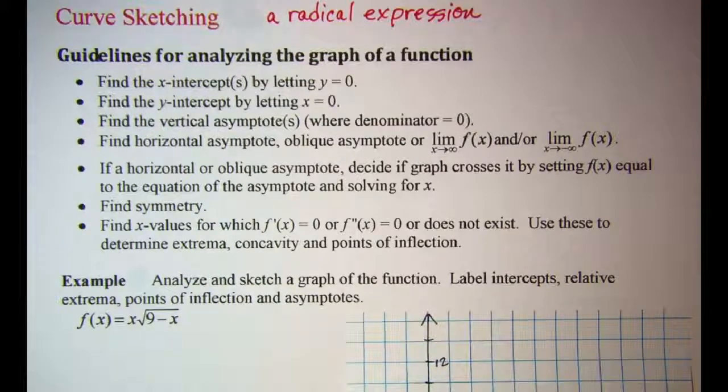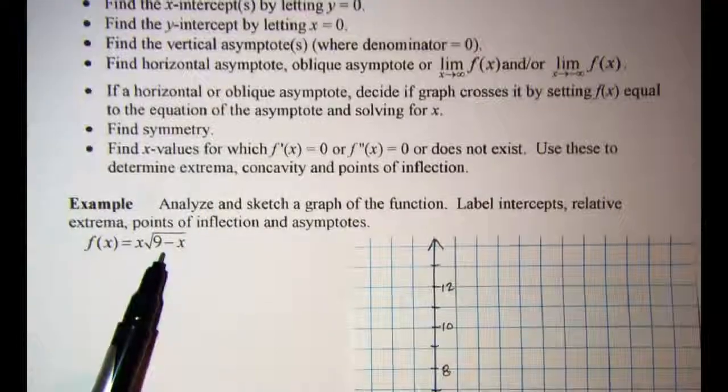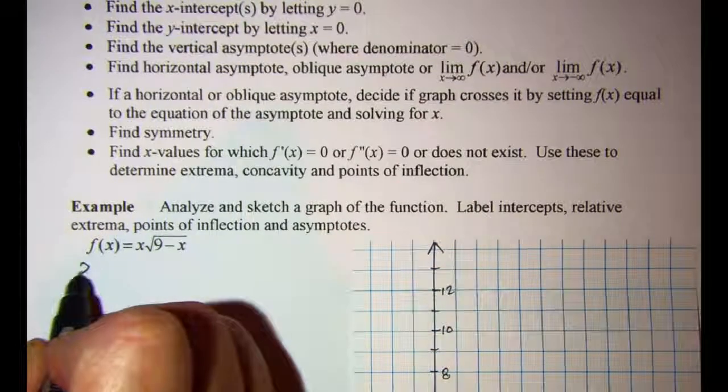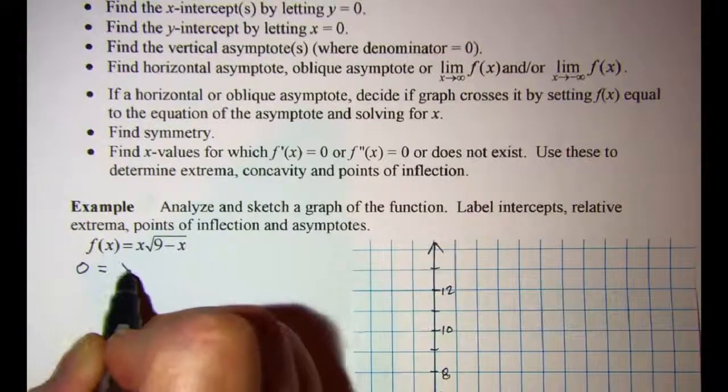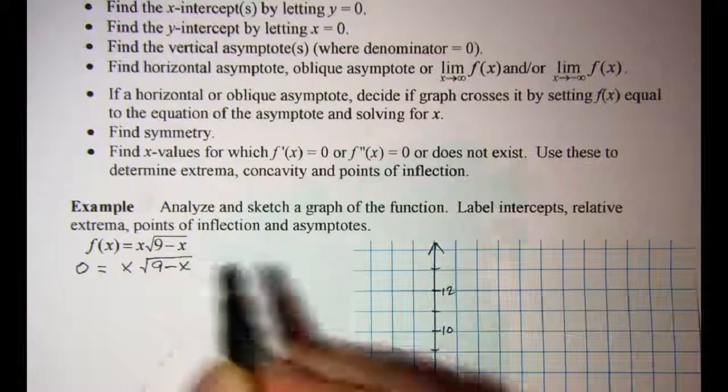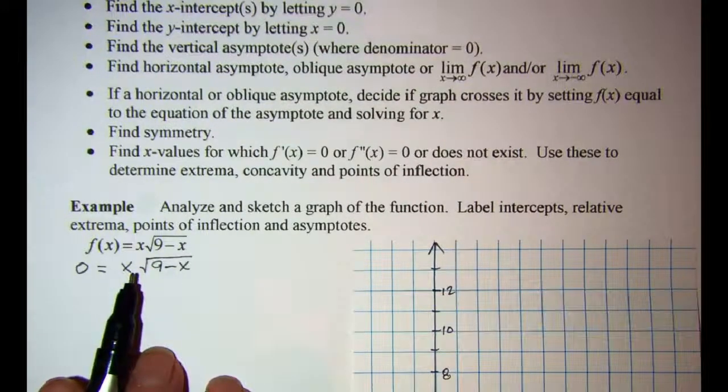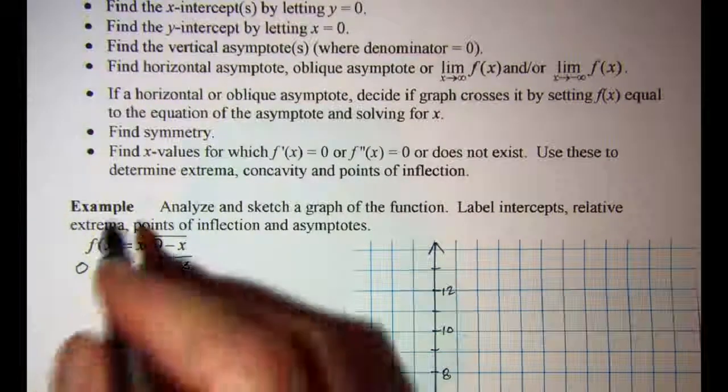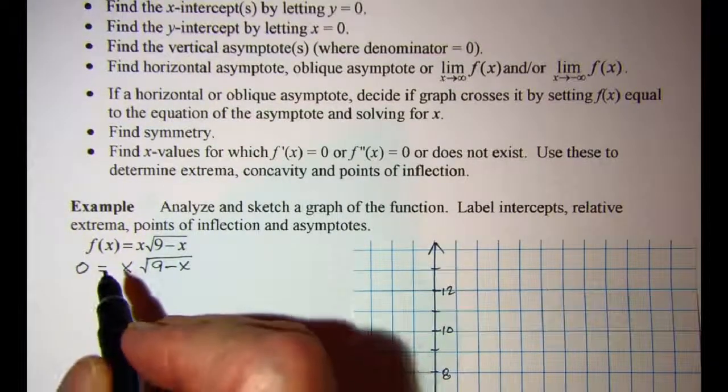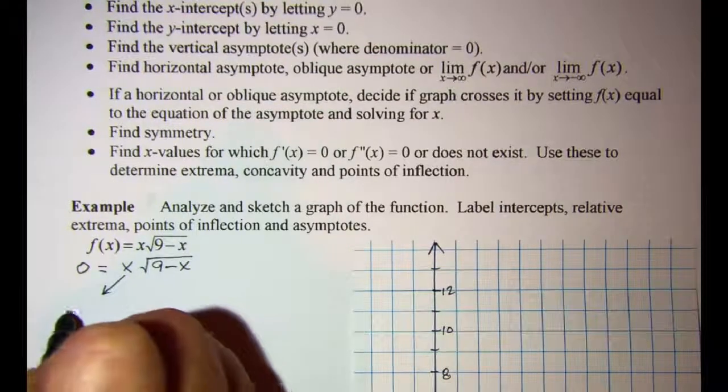The first thing that we wish to do is find the x-intercept of our equation by letting y equals 0. We know that when we have two factors multiplied together and the product is 0, then one or the other or both of the factors are equal to 0.